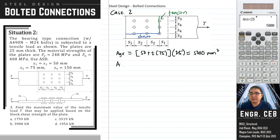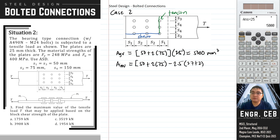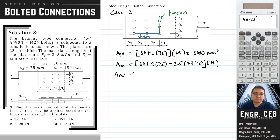For ANV in case 2, we take the same shear width (50 + 2×75) and subtract 2.5 hole diameters (27 + 2), then multiply by 25. ANV = 3,187.5 square millimeters.